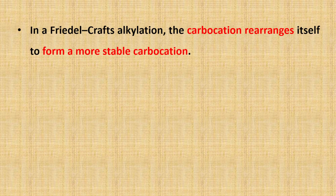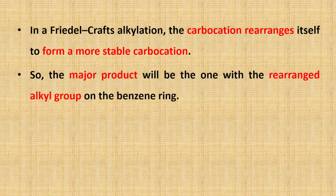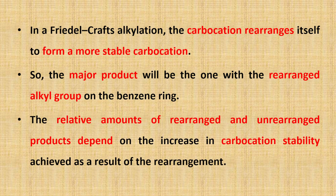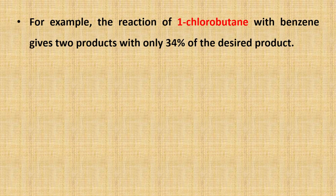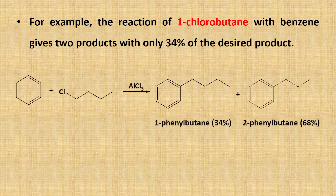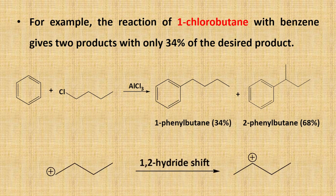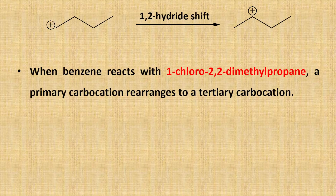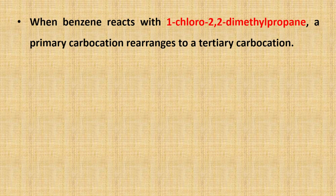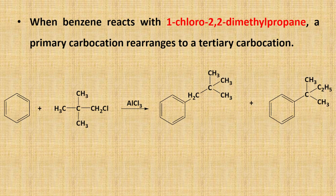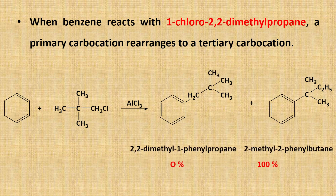In Friedel-Crafts alkylation, the carbocation rearranges itself to form a more stable carbocation. So the major product will be the one with the rearranged alkyl group on the benzene ring. The relative amount of rearranged and unrearranged products depends on the increase in carbocation stability achieved as a result of rearrangement. For example, the reaction of 1-chlorobutane with benzene gives two products, with only 34% of the desired product, due to a 1,2-hydride shift from primary to secondary carbocation. When benzene reacts with 1-chloro-2,2-dimethylpropane, a primary carbocation rearranges to a tertiary carbocation, and the rearranged product is the sole product at 100%.